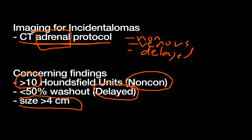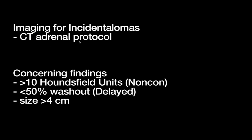Whereas if something washes out easily — takes in contrast and gives it up quickly — that's less likely to be cancer. And of course, bigger is always worse. An important cutoff to think about in adrenal incidentalomas is four centimeters. So on CT adrenal protocol, three phases: what you want to know is the Hounsfield units of the mass — more is worse, brighter is bad. A low washout is bad, meaning this lesion likes blood and contrast, and is more likely to be malignant. And a bigger size is more concerning.